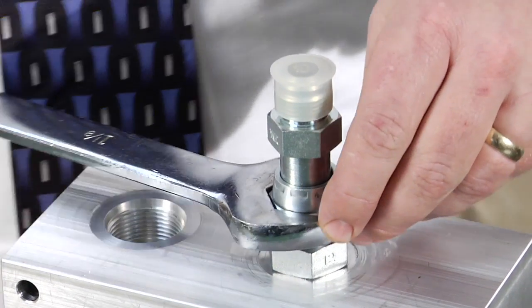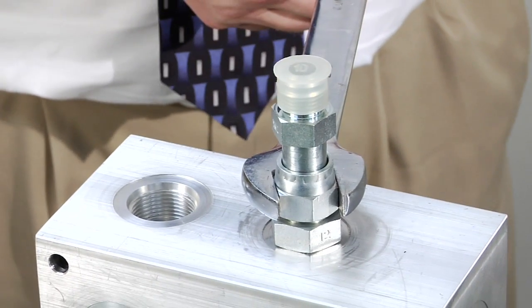Wrench tighten until flange stops against face of fitting. Stop when there is a sudden rise in resistance.